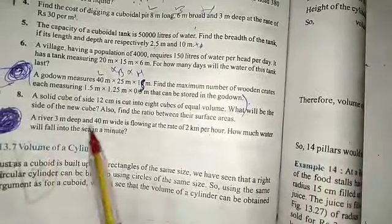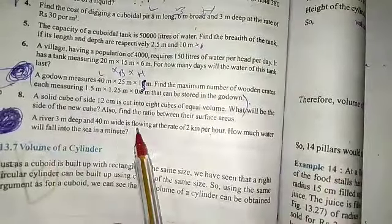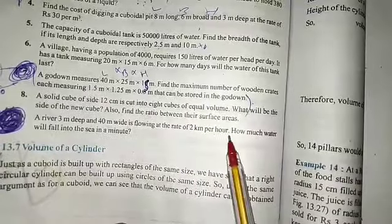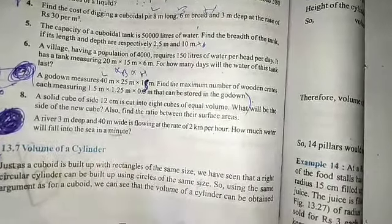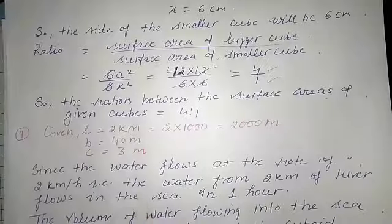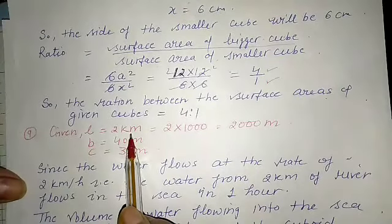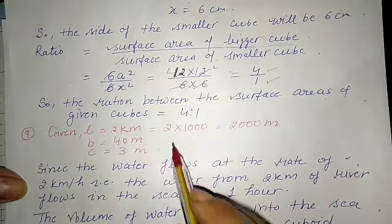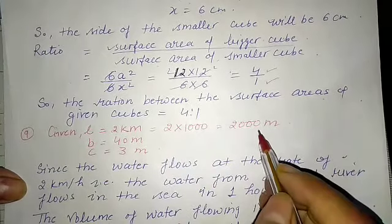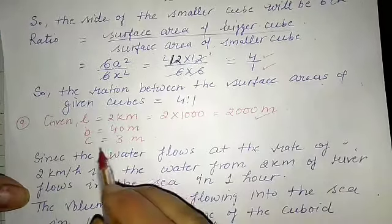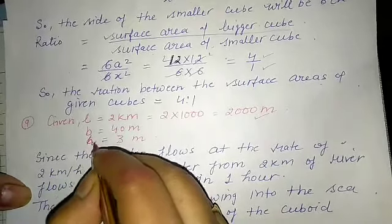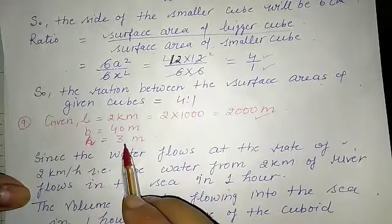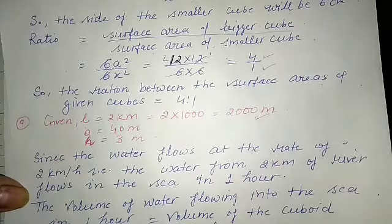The last question: a river 3 meters deep and 40 meters wide is flowing at the rate of 2 kilometers per hour. How much water will fall into the sea in one minute? The length is 2 km = 2000 meters. Since breadth and height are already in meters, we convert length to meters as well.